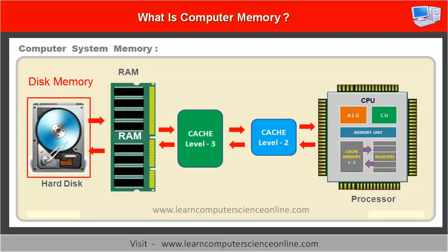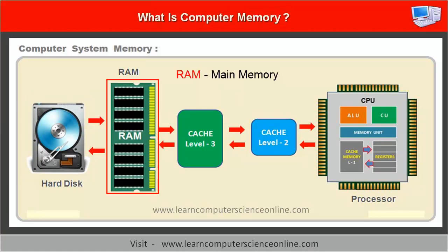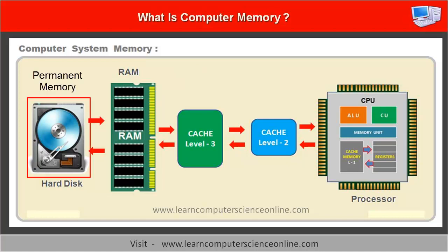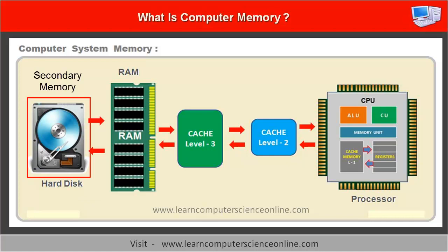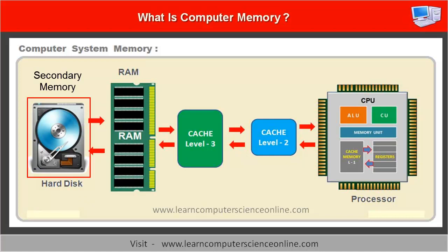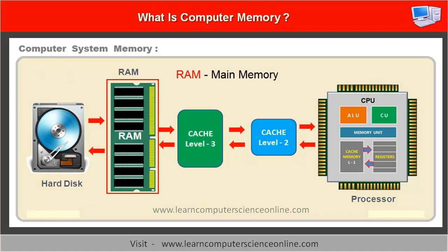The disk memory, which is also commonly referred to as the hard disk. The main memory RAM, also referred to as random access memory. The disk memory is also referred to as permanent memory or secondary memory, because it retains the data when the computer system is powered off. The RAM is considered as the main system memory.